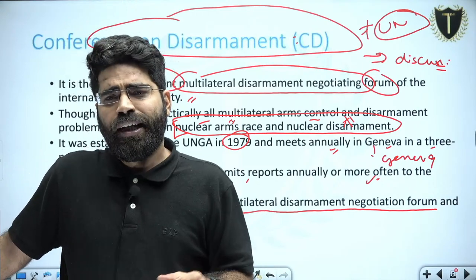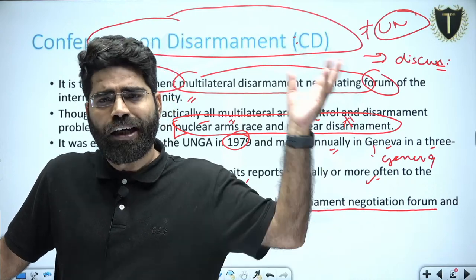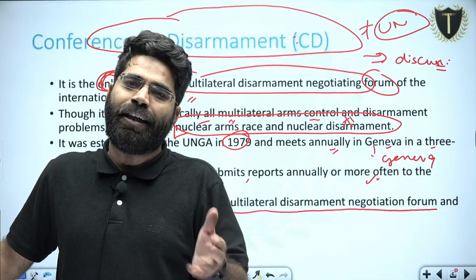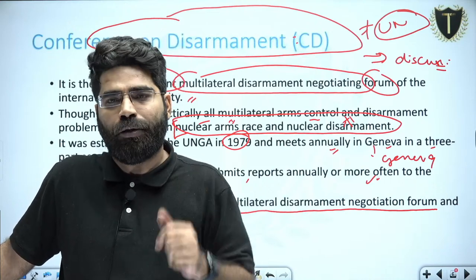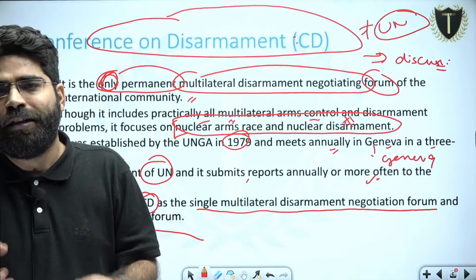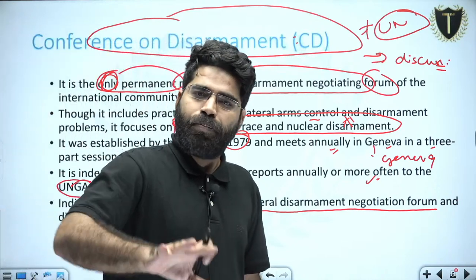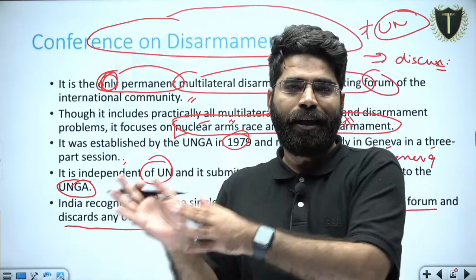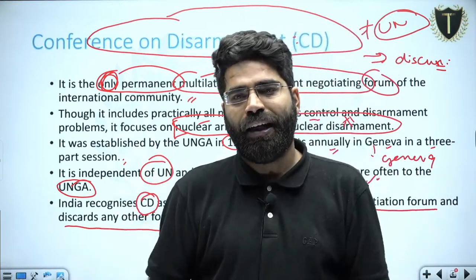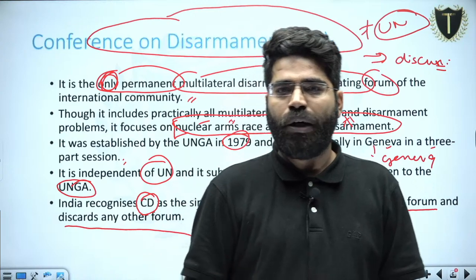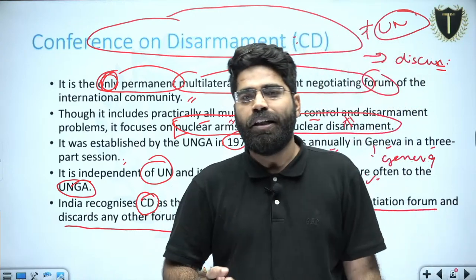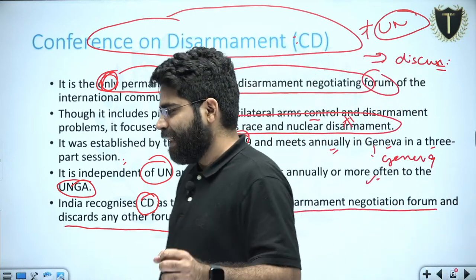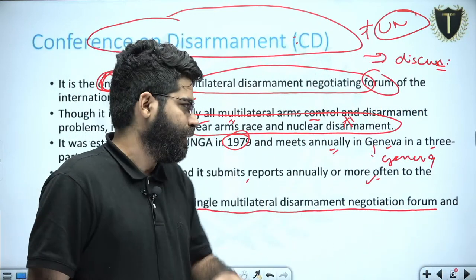India considers NPT and NSG to be discriminatory in nature. NPT says the five powers are nuclear powers, but the rest of the countries cannot test nuclear weapons anymore. India argues: what kind of discriminatory world is being created where five countries can have nuclear stockpiles but no other country can? That is why India has not signed the NPT.